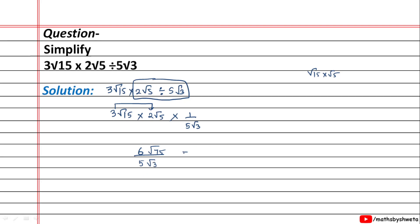This gives 6√75 upon 5√3, which equals 6/5 whole root 75 upon 3. The next step is 6 upon 5 root 25. Root 25 means 5, so our answer is 6. Thank you.